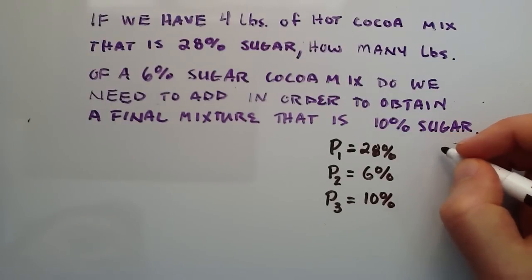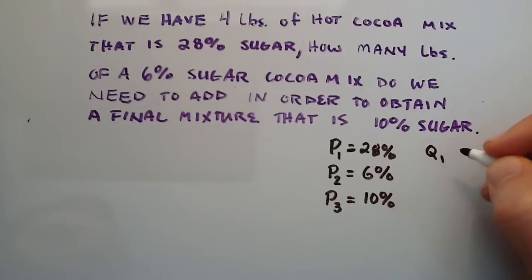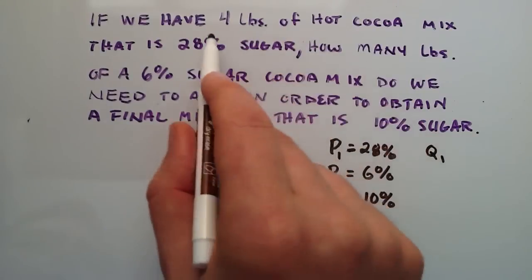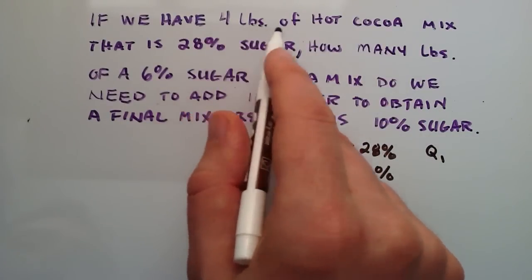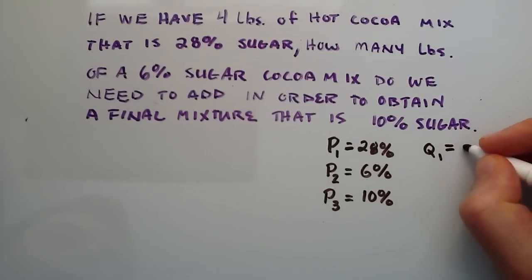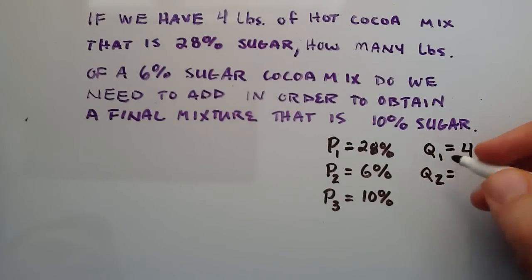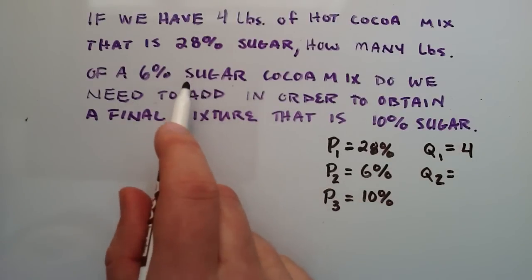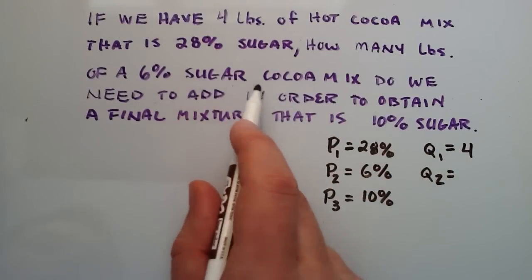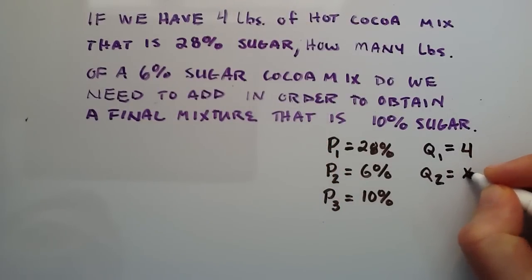We need to figure out the quantity of each mixture. Q1 will be the quantity of cocoa mix we use in mixture 1, and we're going to use the entire 4 pounds, so Q1 is 4 pounds. Q2, on the other hand, we don't know how much of that we need. We're trying to figure out how much of the second cocoa mix we're adding to the first. Since we don't know how much of this 6% sugar cocoa mix we need to add, we're going to say its quantity is X — it's unknown for now.